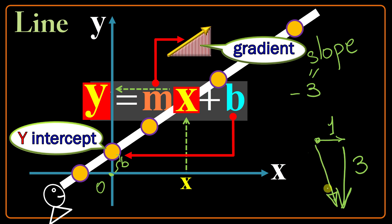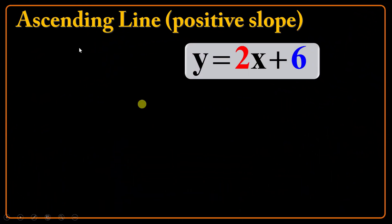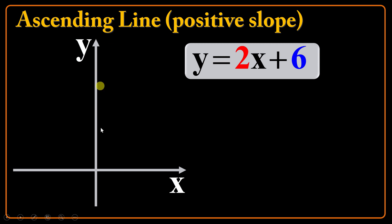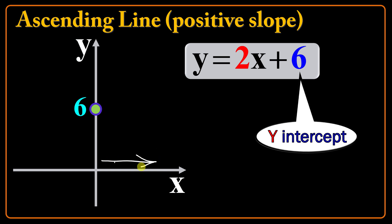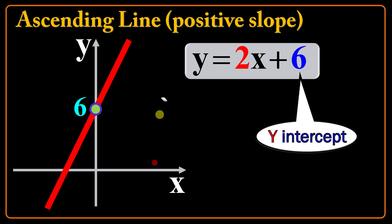Let's have some examples. Look at this example: ascending line, positive slope. Y equals 2x plus 6. Let me put a Cartesian coordinate system here. The y-intercept of this line is 6, meaning the line will pass through the vertical axis at this point, 6 units far from the origin — positive 6. The slope is 2, meaning the line is ascending. If I go in the positive direction of x, the line will take me up, so the line is ascending.